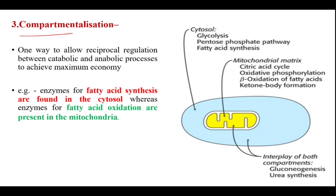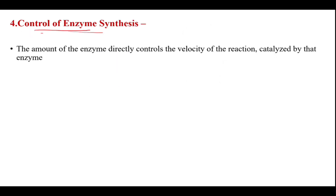Next is compartmentalization, another method of regulation of enzyme activity. One way to allow reciprocal regulation between catabolic and anabolic processes for maximum economy is by compartmentalization. For example, enzymes for fatty acid synthesis are found in the cytosol, whereas enzymes for fatty acid oxidation are present in the mitochondria. This presence of enzymes at different locations helps in achieving regulation of enzyme activity.